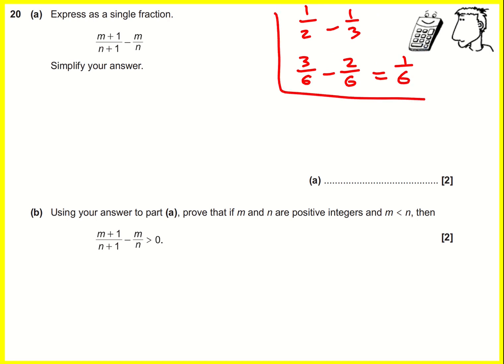It's actually the same kind of process for this algebraic one. I want to get a common denominator, so I could multiply top and bottom of the left-hand one by n and top and bottom of the right-hand one by n plus 1. Here goes.